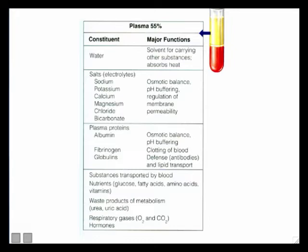Albumin is for pH buffering and osmotic balance. The plasma also carries hormones — signal molecules that travel in the blood allowing one part of the body to send signals to another. So there's a lot going on in the plasma: it's mostly water, but with a whole bunch of important molecules dissolved in it.